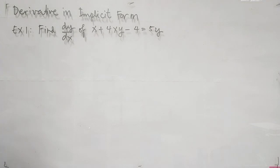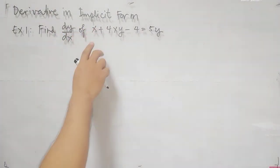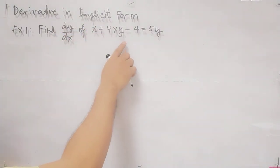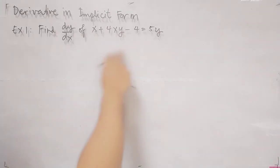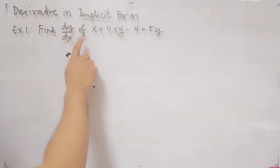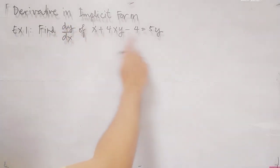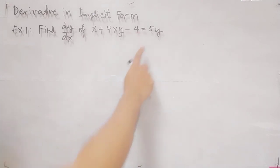Our discussion today is all about the derivative of an implicit function. We go directly to an example of finding the derivative in implicit form. If you have noticed, x plus 4xy minus 4 equals 5y — this is in implicit form.